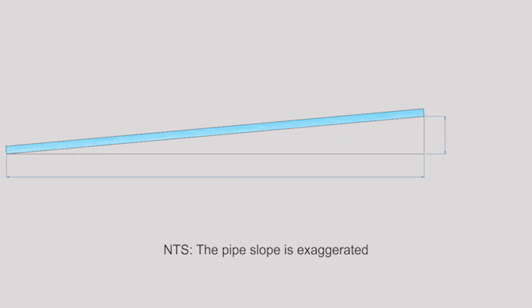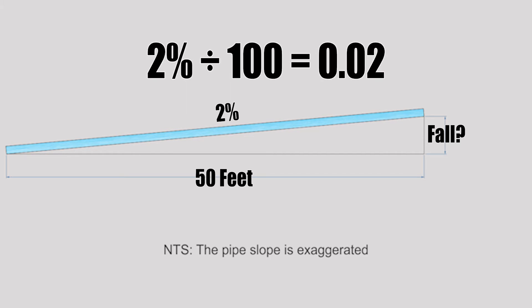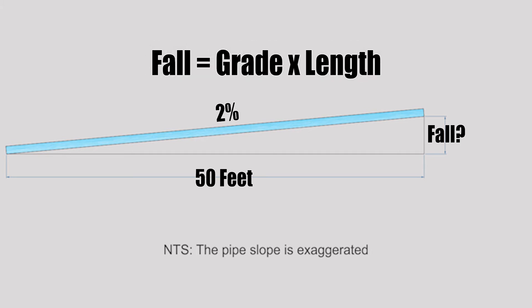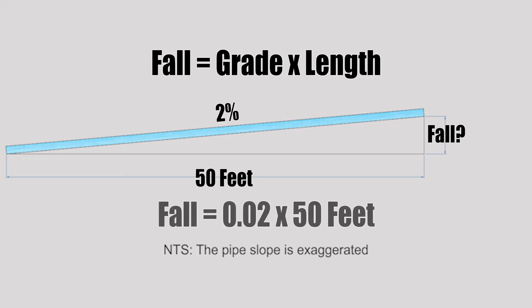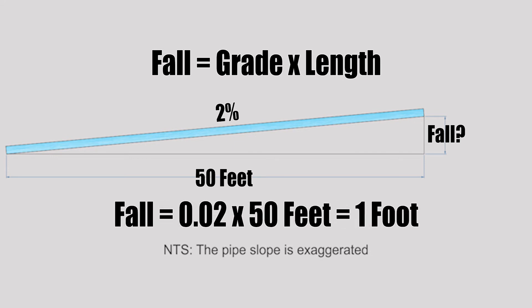Our next two examples use percent grade. I have a pipe that is 50 feet long with a grade of 2 percent, and I need to find the total fall. To convert percent to a decimal, divide by 100: 2 percent divided by 100 equals 0.02. Plugging into the formula — fall equals grade times length — 0.02 times 50 feet gives us a total drop of one foot.